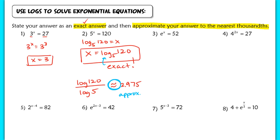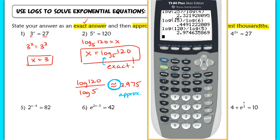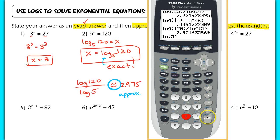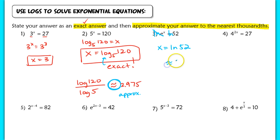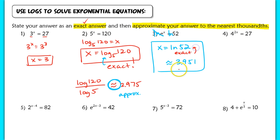In number 3, e to the x equals 52. Take the natural log of both sides to isolate x: x equals the natural log of 52. That's the exact answer. Plugging into the calculator — natural log of 52 — gives approximately 3.951.